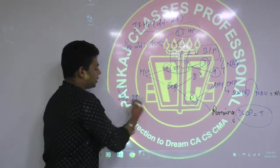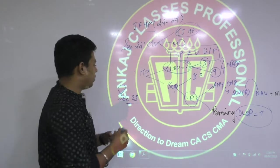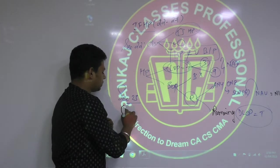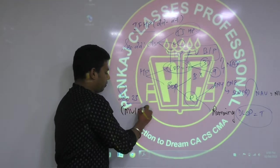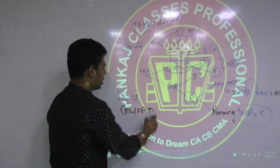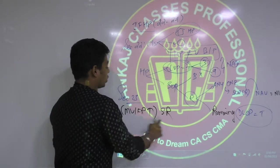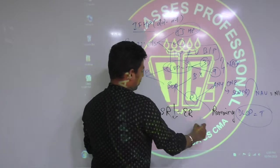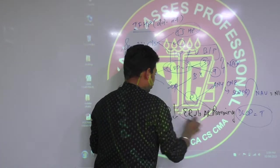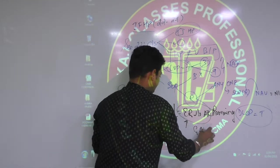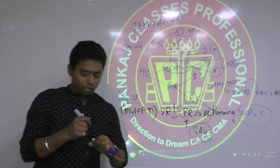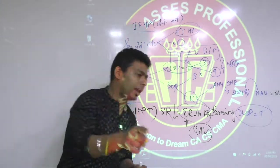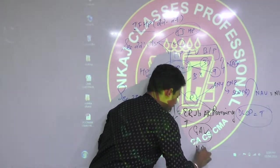How do we determine annual capacity? That is given under Section 23. We start with municipal value, compare it with fair rent — whichever is higher — then compare that amount with standard rent — whichever is lower — that gives us expected rent. Expected rent is compared with actual rent — whichever is higher is your gross annual value. From gross annual value, subtract municipal taxes paid by the owner, and you get net annual value.